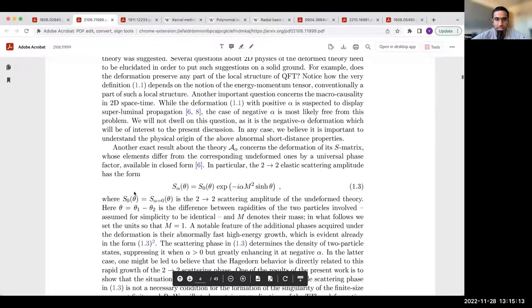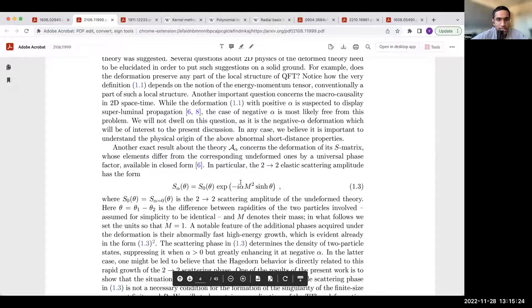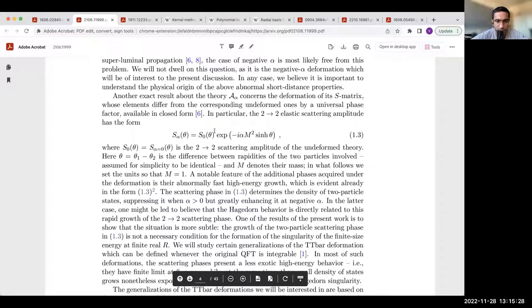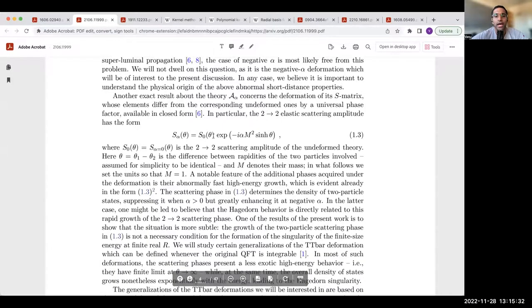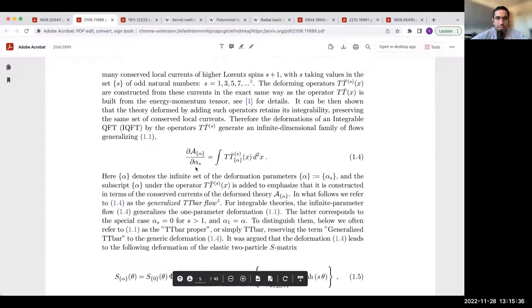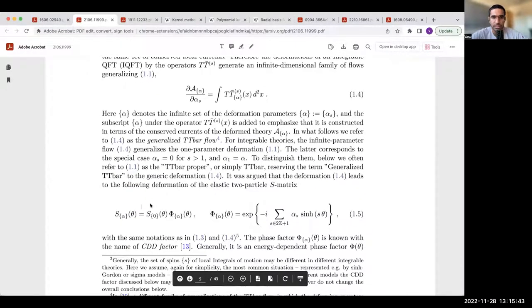What does it do to the S matrix? The answer is given by the so-called CDD phase. The effect that the pure tt-bar deformation has on the S matrix is to deform it by a phase which is rapidity dependent. This is what happens to the elastic 2 to 2 scattering amplitude where S_0 is the amplitude of the undeformed theory. When we have the higher spin generalized tt-bar deformations, we have a family of flow equations. The effect on the phases is that we have the two particle S matrix be deformed by an exponential with a sum over alpha_S sinh(S theta).